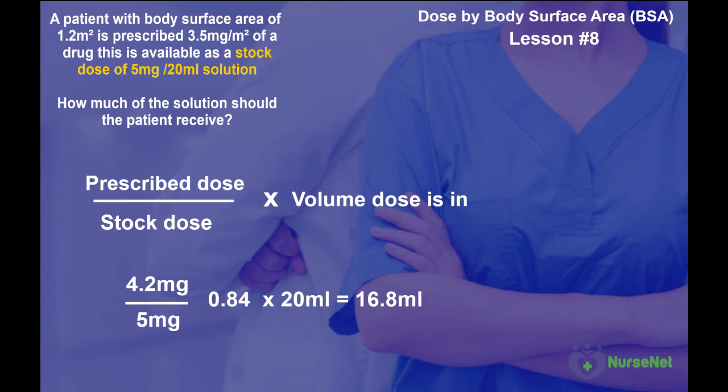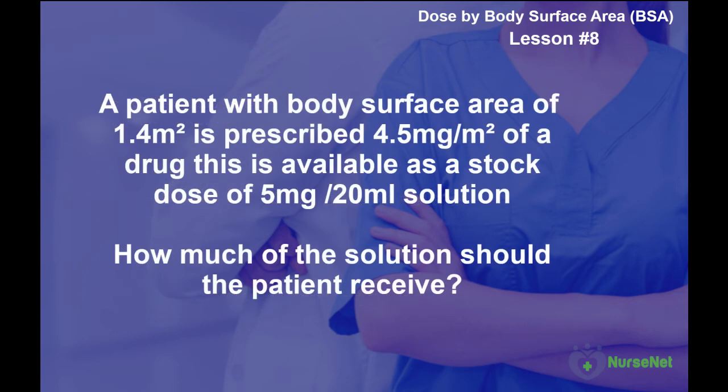Now it's your turn. A patient with a body surface area of 1.4 meter squared is prescribed 4.5 milligrams per meter squared of a drug that is available in a stock dose of 5 milligrams per 20 milliliters of solution. How much of the solution should the patient be given? You can pause the video and press play when you're ready to reveal the answer.